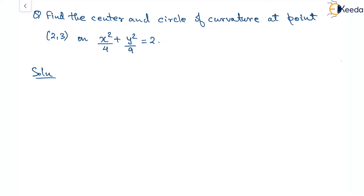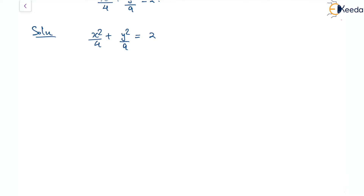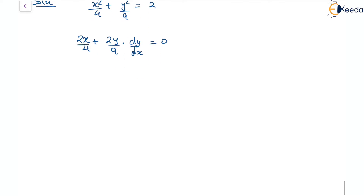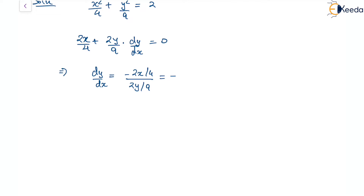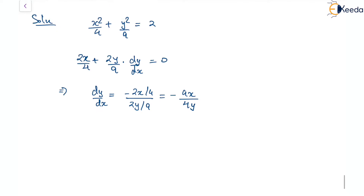For x²/4 + y²/9 = 2, differentiating with respect to x we have 2x/4 + (2y/9)(dy/dx) = 0. From this we can get dy/dx equal to minus (2x/4) divided by (2y/9), which simplifies to minus 9x divided by 4y.